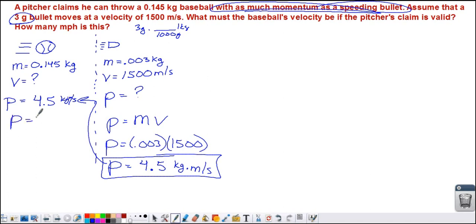Same equation. Momentum equals mass times velocity. So 4.5 kilograms times meters per second is equal to the mass, 0.145 kilograms, times the velocity. Divide both sides by 0.145. The pitcher must be pitching this baseball with a velocity of 31 meters per second.